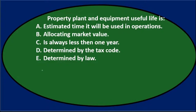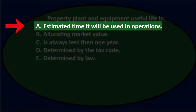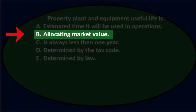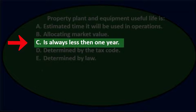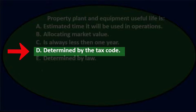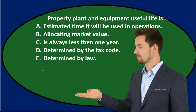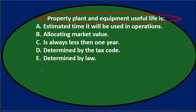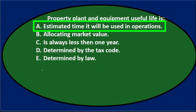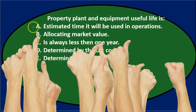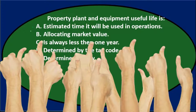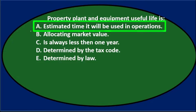Next question. Property, plant, and equipment useful life is: A — estimated time it will be used in operations. B — allocating market value. C — is always less than one year. D — determined by the tax code. E — determined by law. Let's go through this again with the process of elimination. A: estimated time it will be used in operations — that seems pretty good, because that's what the estimated useful life will be. Let's go through the rest to see if we can eliminate them.